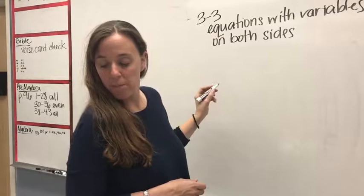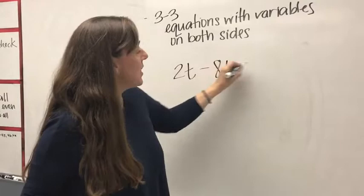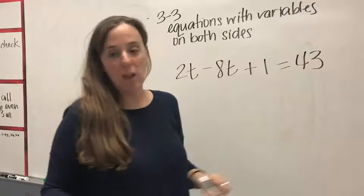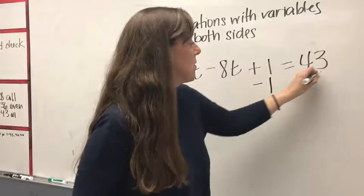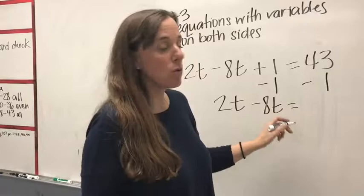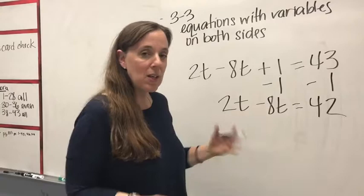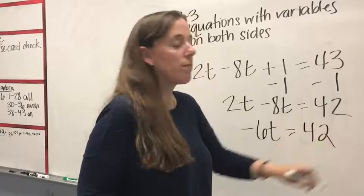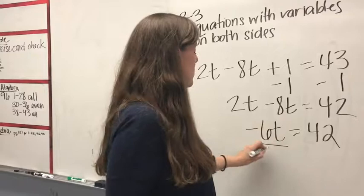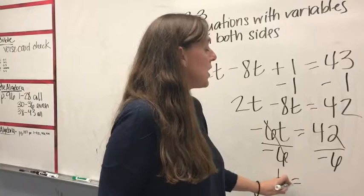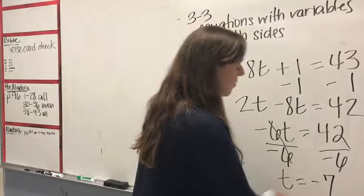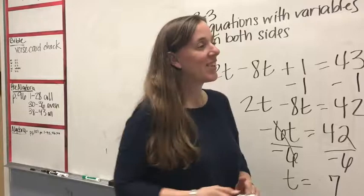Let's look at this: 2t minus 8t plus 1 equals 43. The first thing we're going to do is subtract 1 from both sides, leaving us with 2t minus 8t equals 42. Combining like terms gives negative 6t equals 42. Then divide by negative 6 to isolate t, giving t equals negative 7.